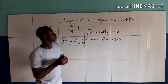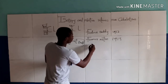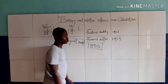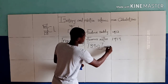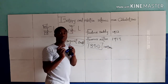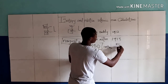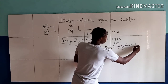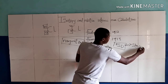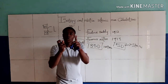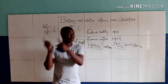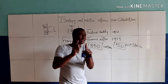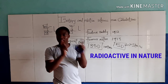It should be noted that in chemistry we have over 350 isotopes, where 50 are the stable ones. Isotopes can be stable and unstable. The unstable isotopes are usually radioactive in nature.